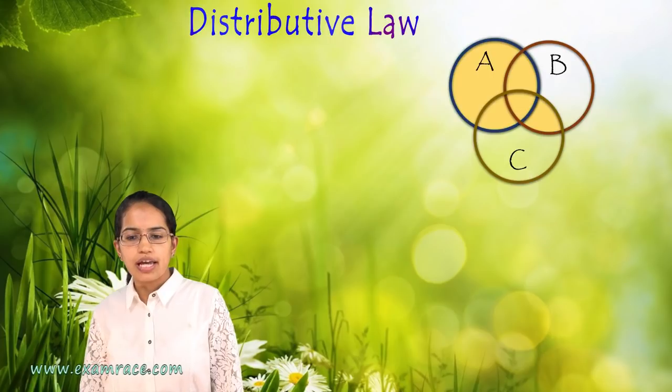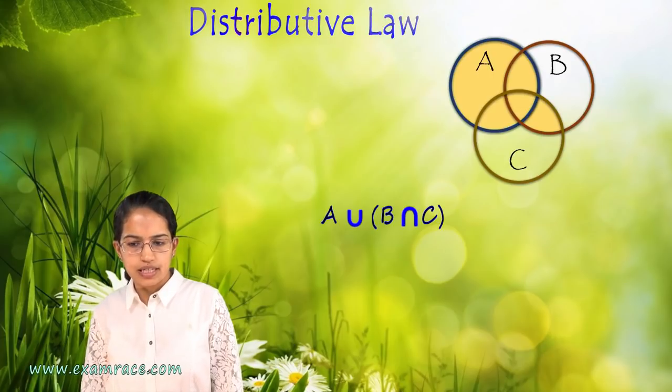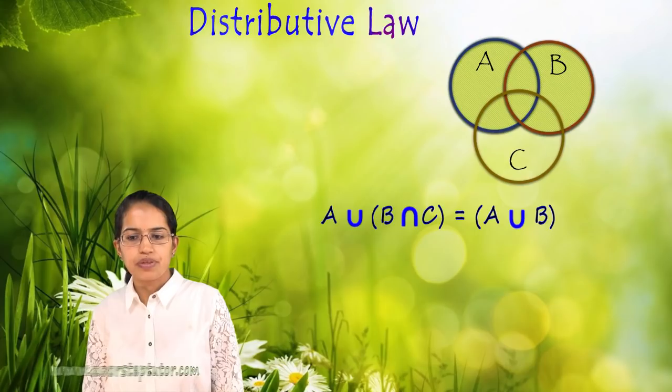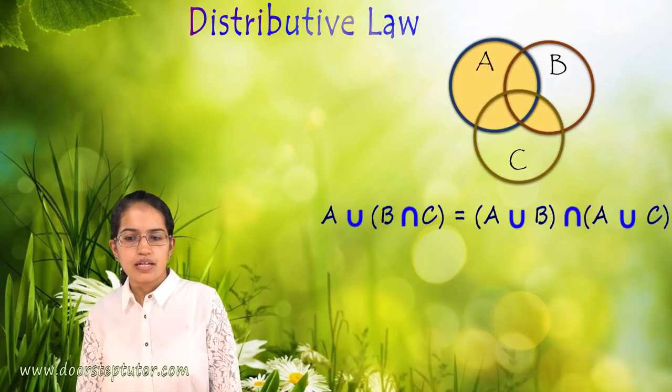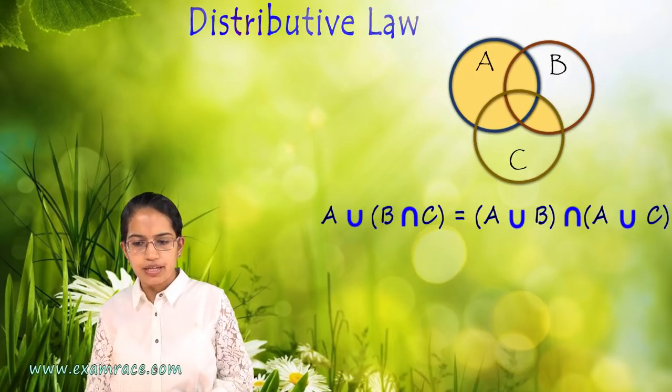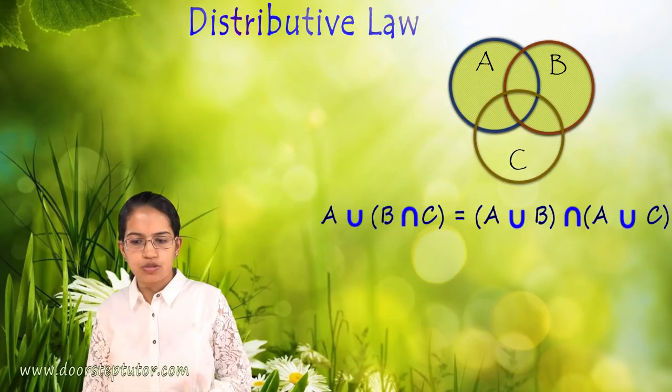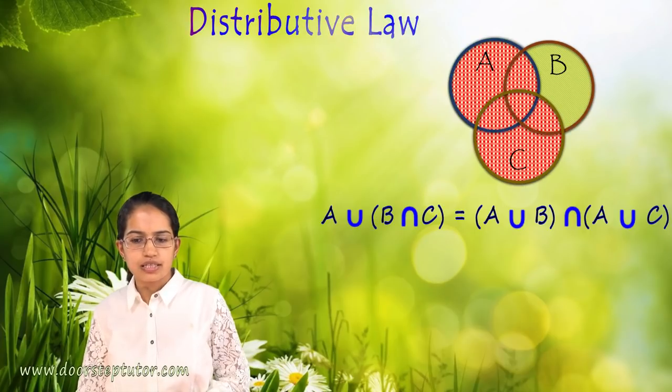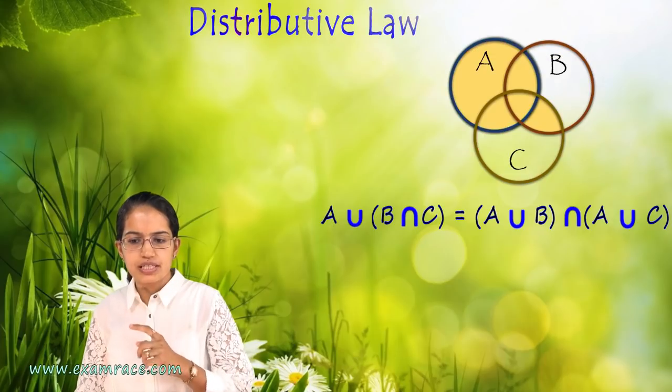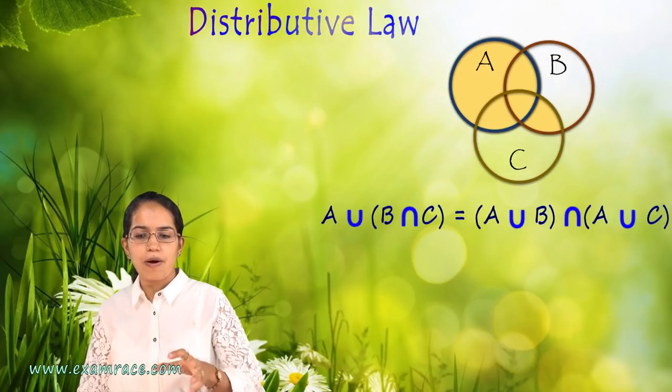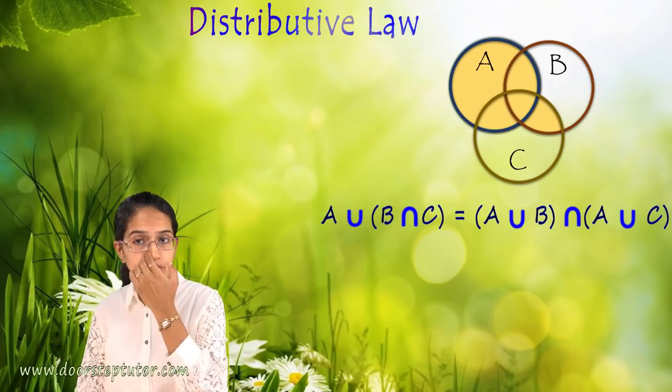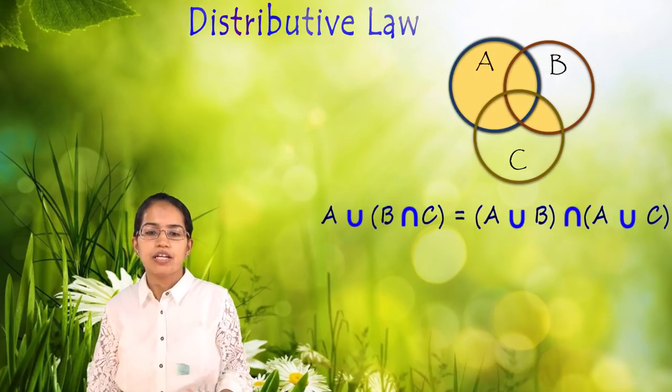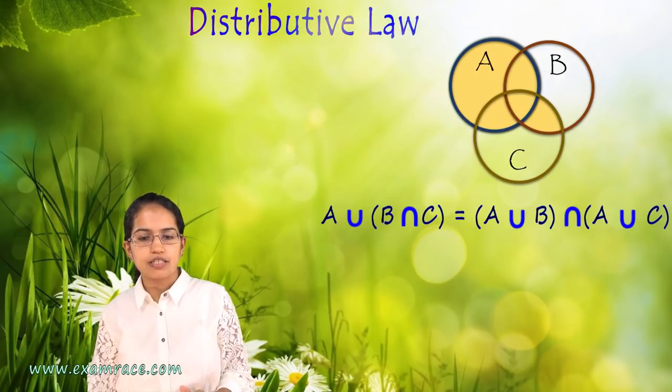When I say distributive law A union B intersection C would be equal to A union B intersection A union C. A and B the union of A and B this is A, B and C. A union B is this whole thing. A union C is this whole thing and intersection of this is this region where I talk about the common area that's lying between A union B and A union C. That would be the intersection point. That's how we explain the distributive law.